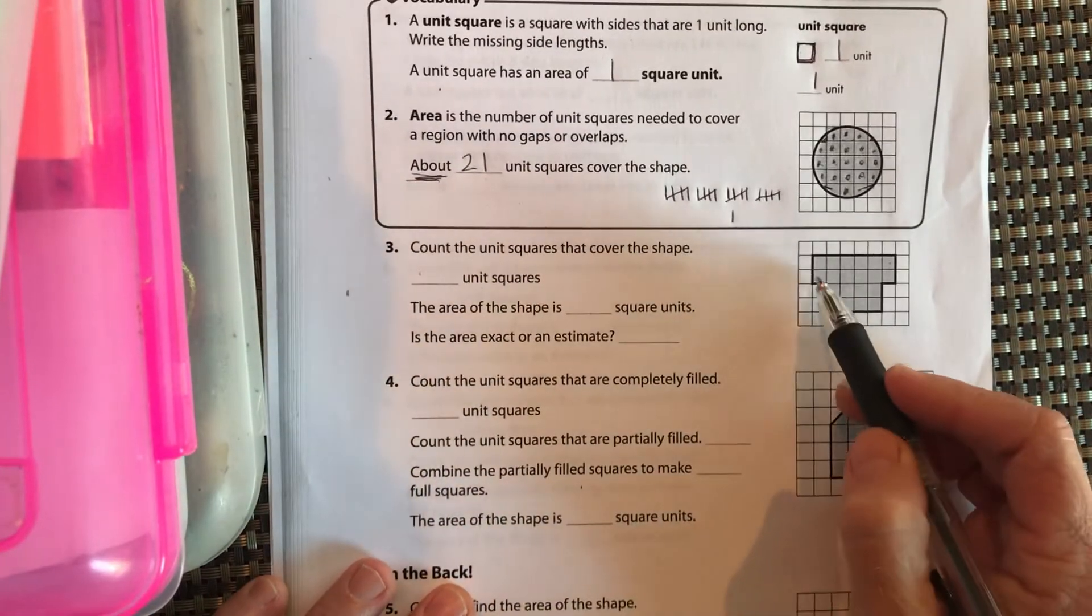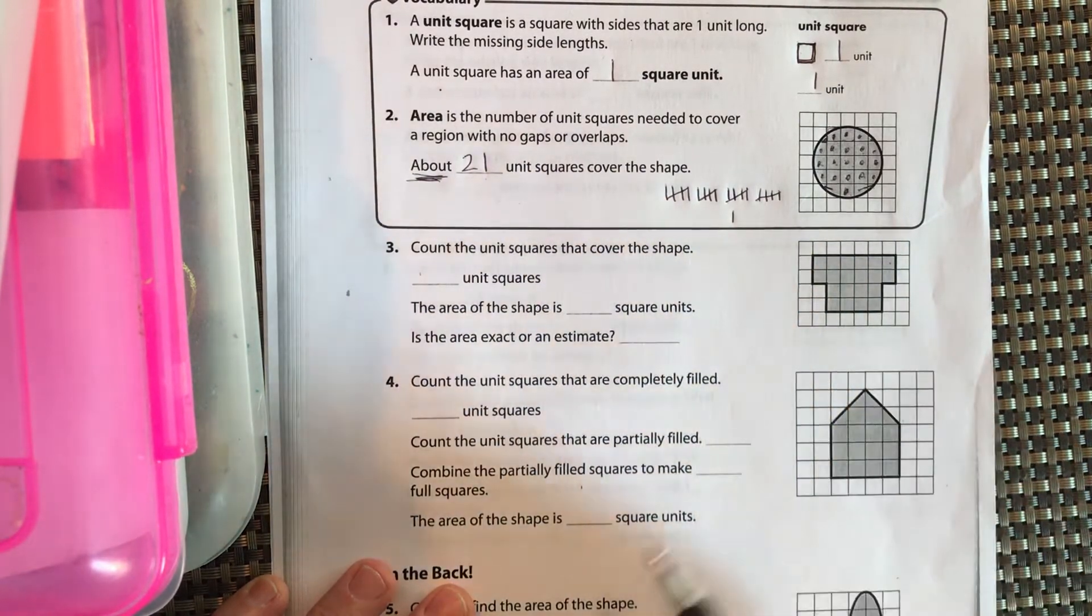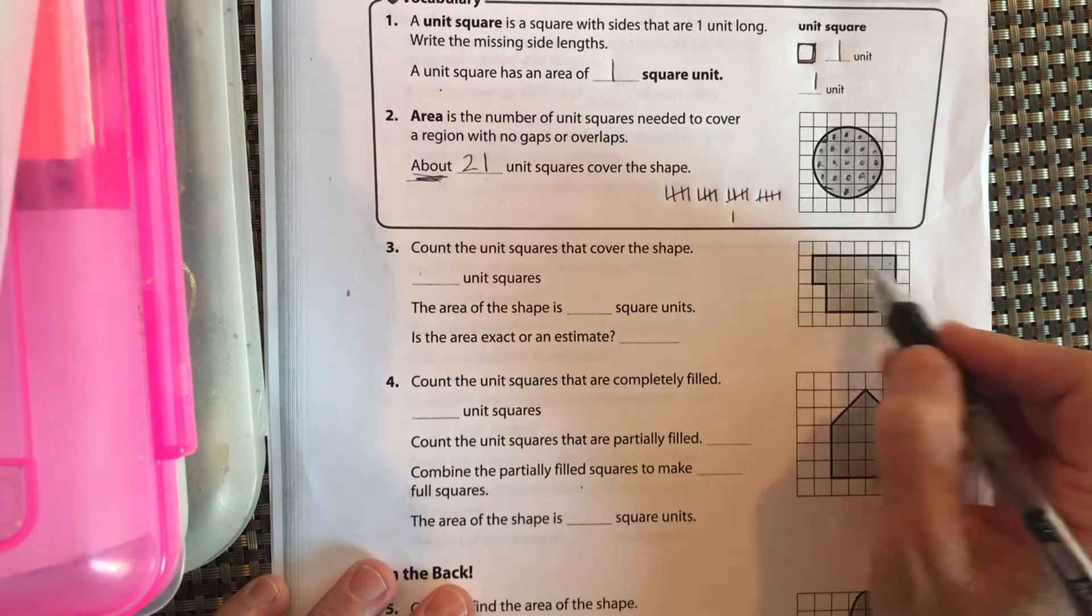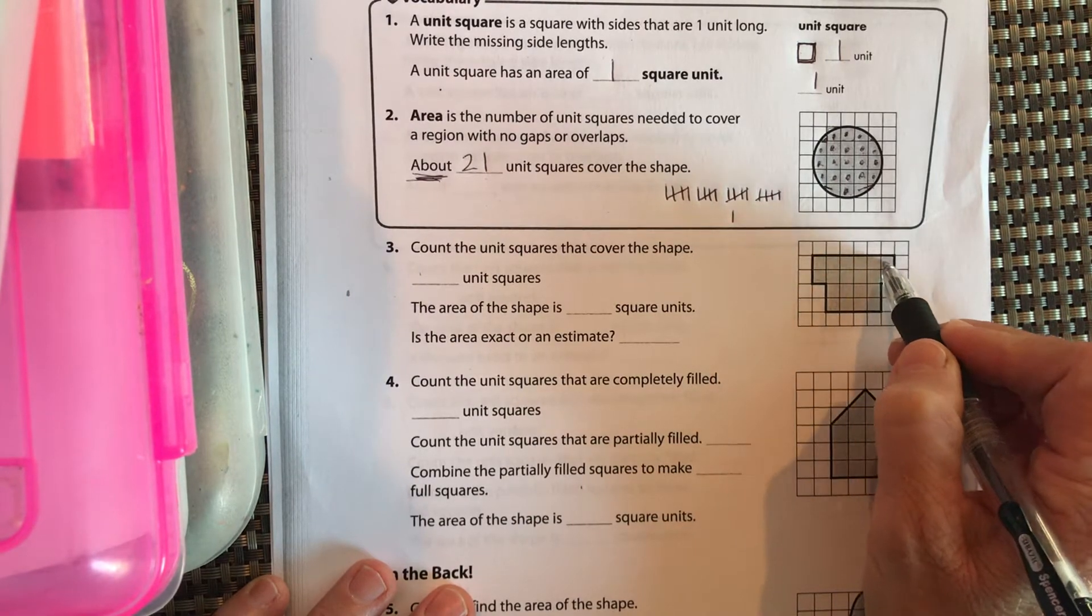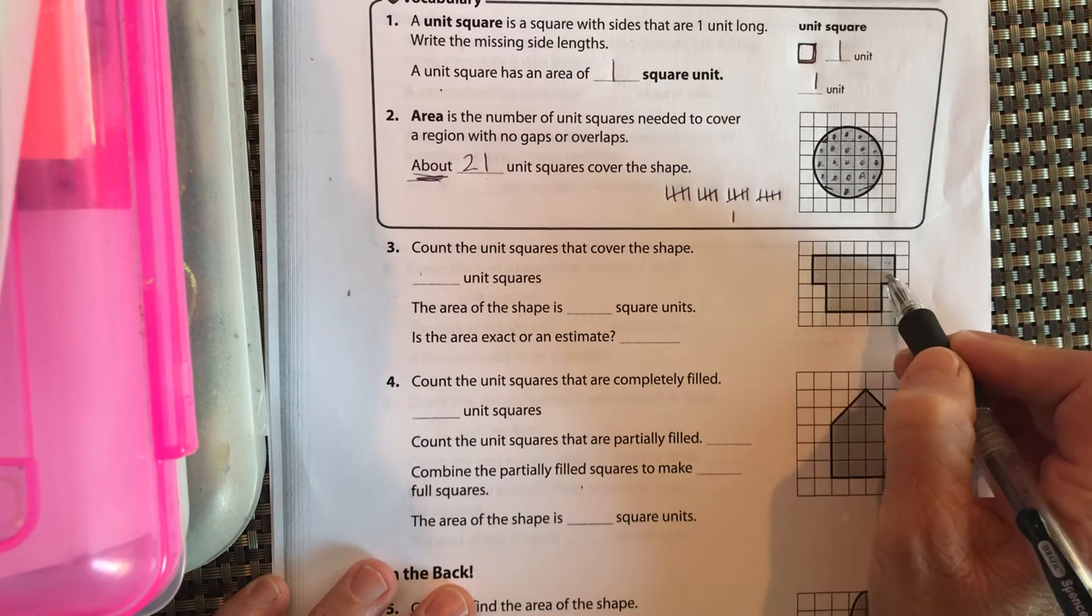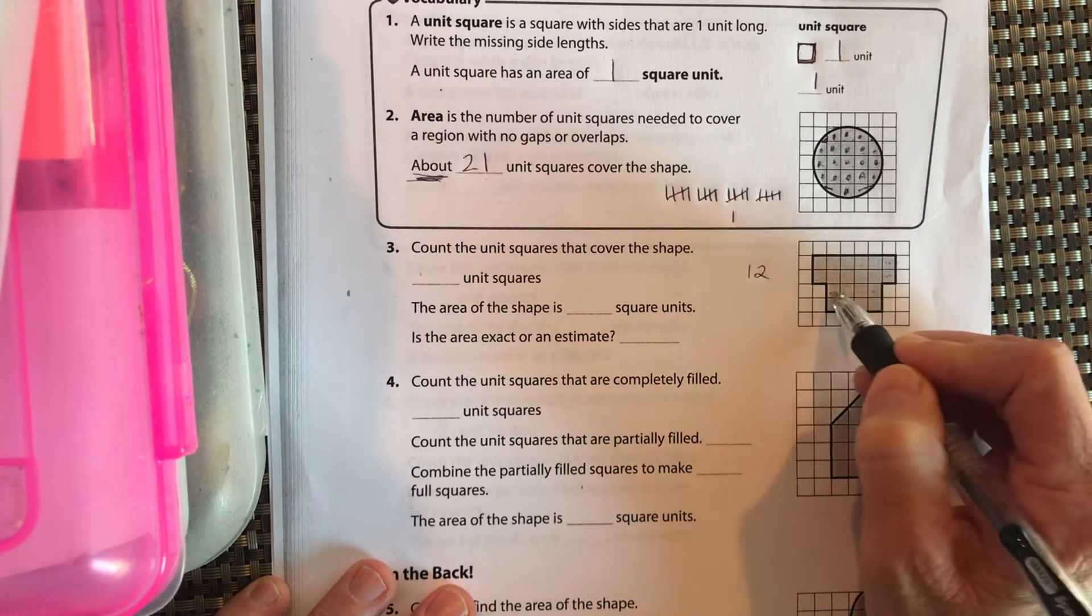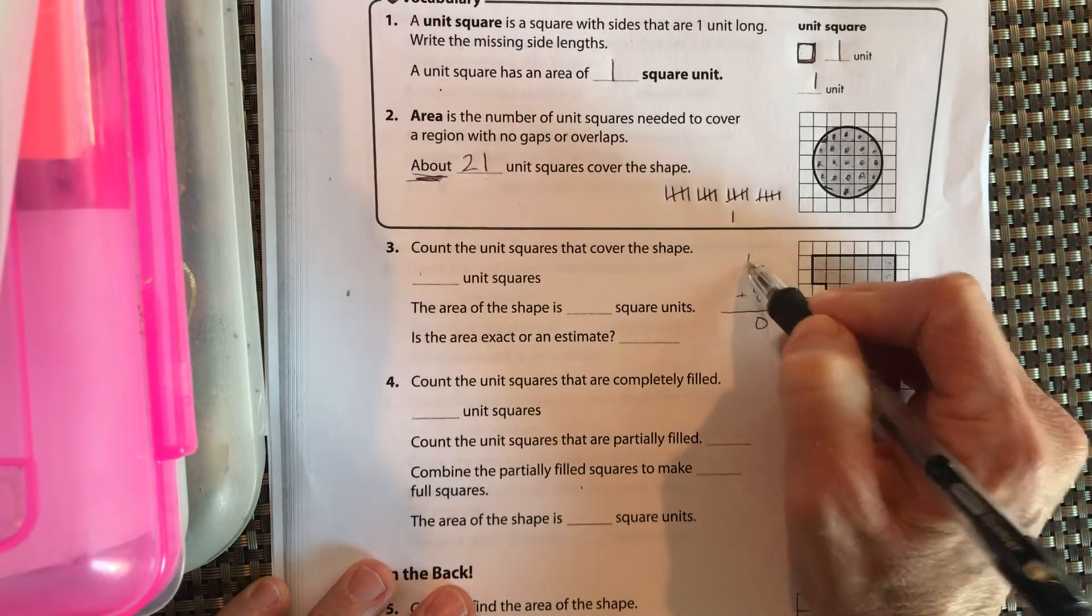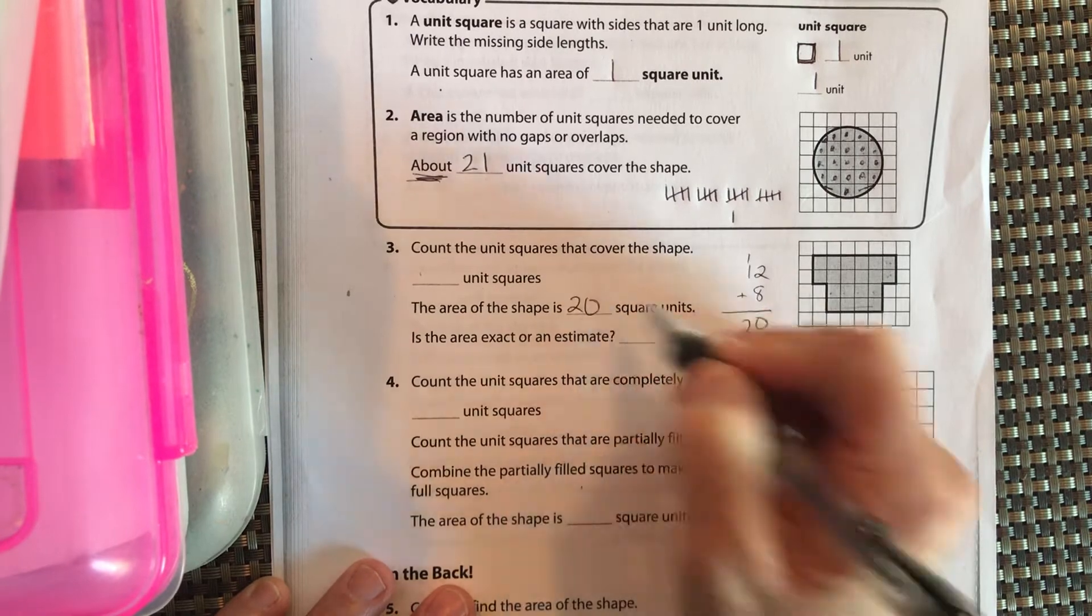Now let's look at this one. This one, all of them are all the way filled in. So this is much easier to count how many shaded boxes we have. This row is the same distance as that row, right? So we got 1, 2, 3, 4, 5, 6. So if this is 6 and this is 6, that's 12. And then we have 1, 2, 3, 4. If this is 4 and that's 4, that's 8. We have 20 square units.